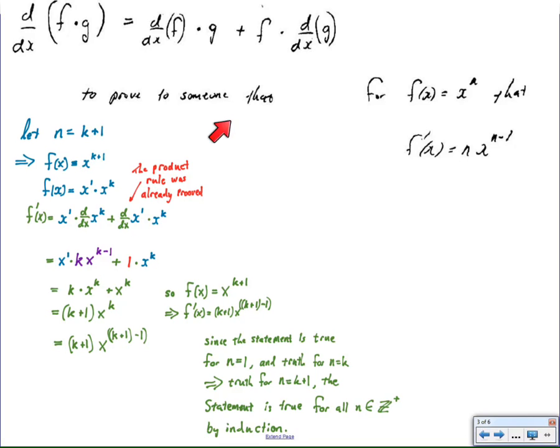So now we're able to say that if f of x equals x to the k plus one, then f prime of x is equal to the coefficient times the power, drop the power by one. Thus, we could say that the power rule is true, because it's true for n equals one, and the truth for n equals k leads to the truth for n equals k plus one. Then, by the process of mathematical induction, the statement is true for all integers.